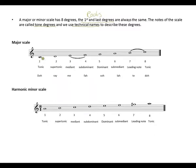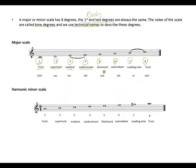This is a C major scale. First degree, second degree, third degree, fourth degree — remember between the third and fourth degree it's your first semitone. Then your fifth, sixth, seventh, and eighth — another semitone. The technical name for the first degree is tonic, second is supertonic, third is mediant, fourth is subdominant, fifth is dominant, sixth is submediant, and the seventh degree is the leading note, resolving to the tonic.